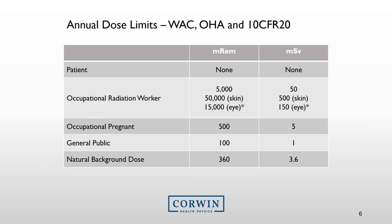The annual radiation dose limits come from Title 10, Code of Federal Regulations, Part 20, which specifies that occupational radiation workers can only receive 5,000 millirem total effective dose equivalent, or 50 millisieverts. There are additional dose limits for other parts of the body: the skin can only receive 50,000 millirem and the eyes can only receive 15,000 millirem. Patients, however, can receive any dose that the doctor has deemed necessary for their procedures or diagnostic studies — there is no limitation on patient radiation dose.